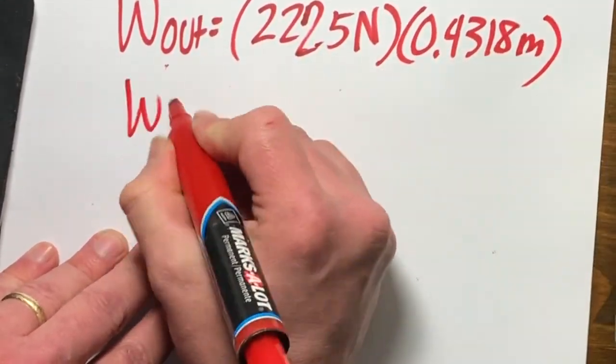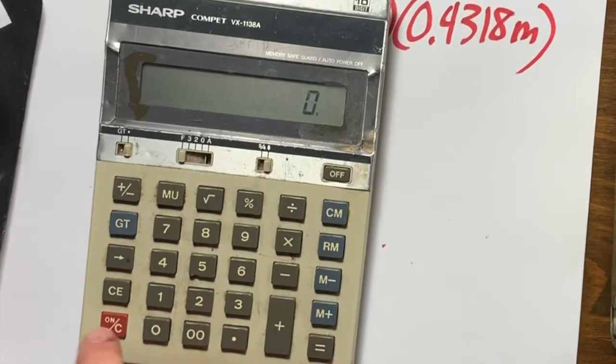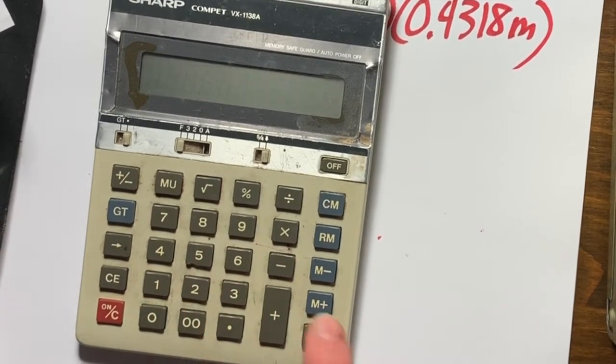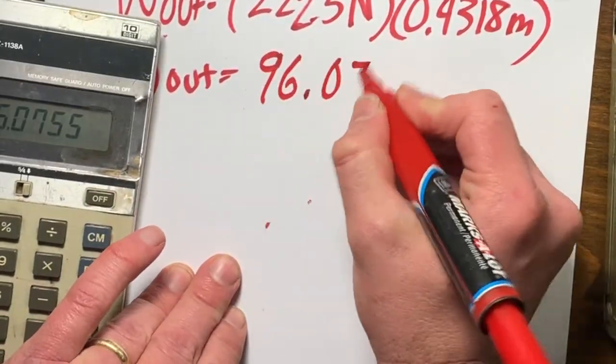So that makes the work out, the work that I'm doing without using the machine, that force, that weight times the height. So I'm doing about 96 joules of work.